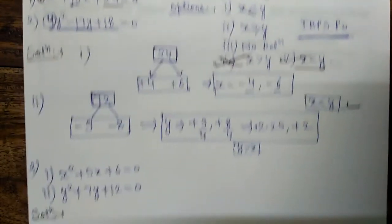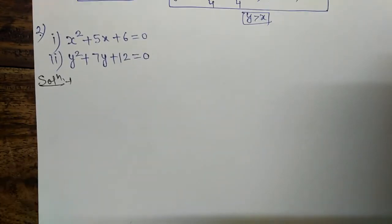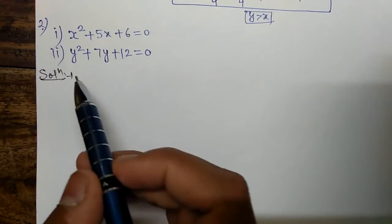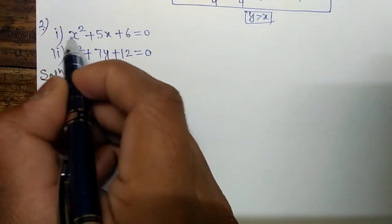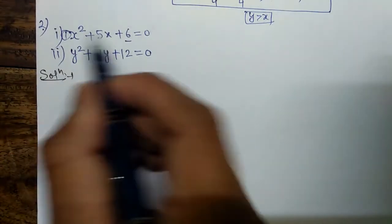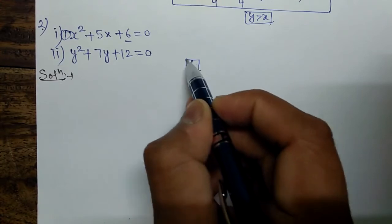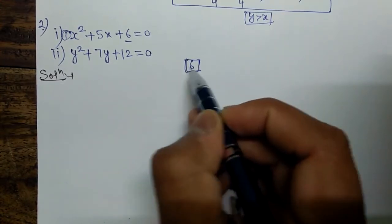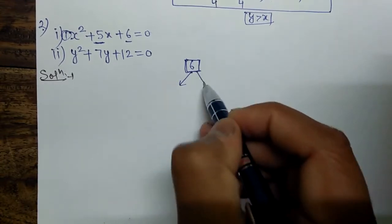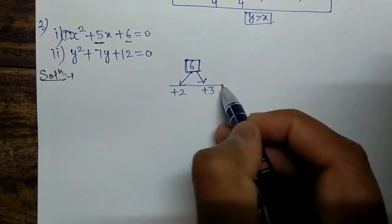Let's do one more question for better clarity. The coefficient of x² is 1 and the constant value is 6. 1 × 6 = 6. We need to factor 6 such that by adding the factors we get 5. The factors are +2 and +3 — adding gives 5 and multiplying gives 6.